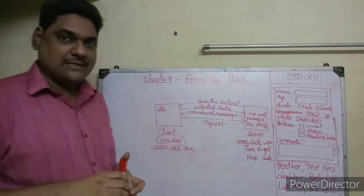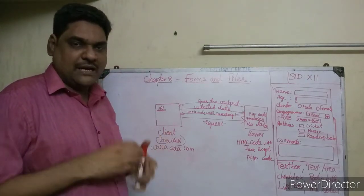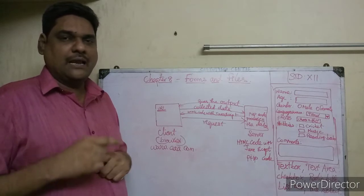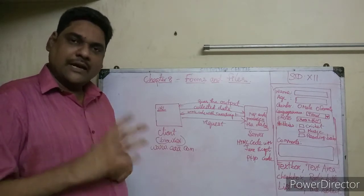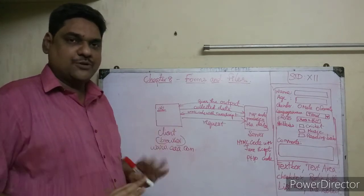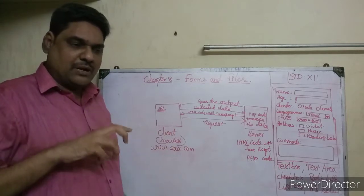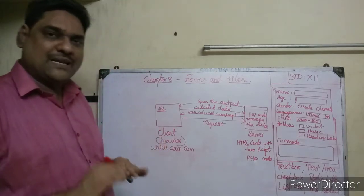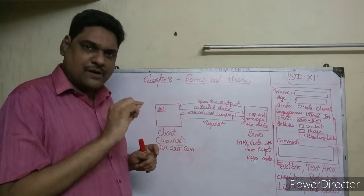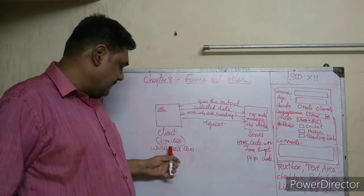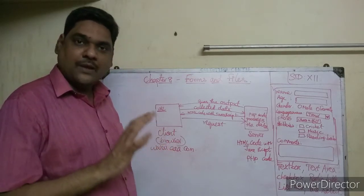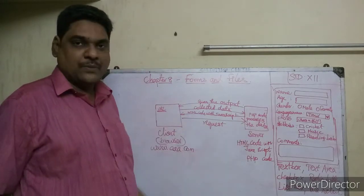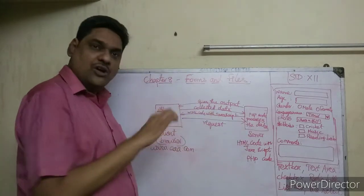First, the client machine. Any computer with a browser — Google Chrome, Mozilla Firefox, Internet Explorer, or any browser — along with a net connection, is called a client. When you type a website name like www.aaa.com in the browser, a request is sent to the server where that website is stored.